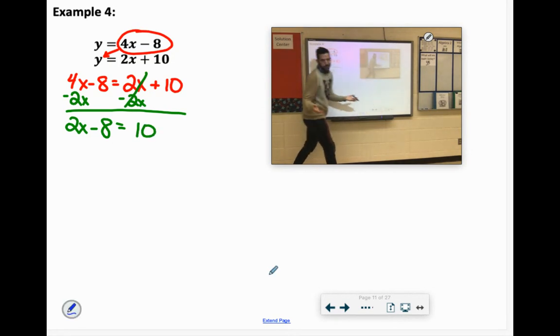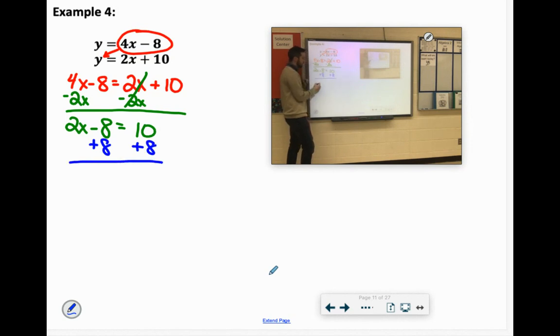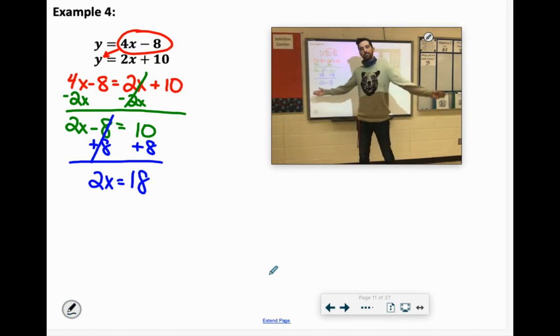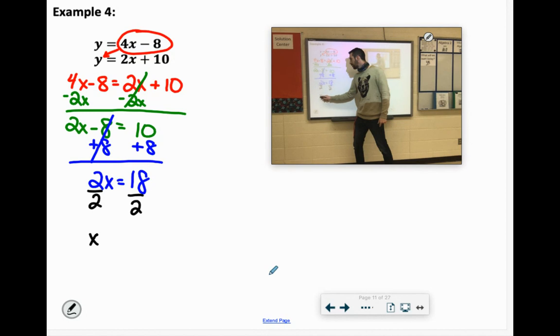It's a two-stepper now. We get rid of minus 8 by adding 8 to both sides. Gather round, children. These cancel out, we got 2x equals 18. 10 plus 8 is 18, no big deal. Now we just got to get rid of the 2. Divide by 2. 18 divided by 2 is 9.